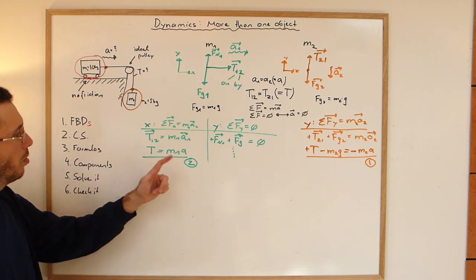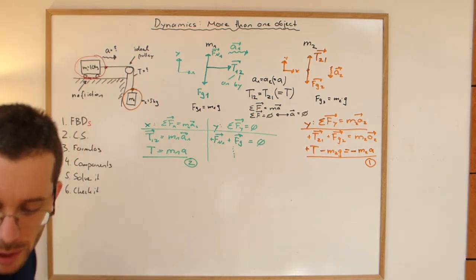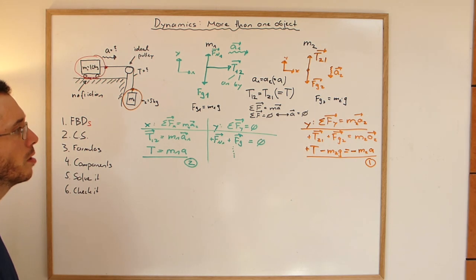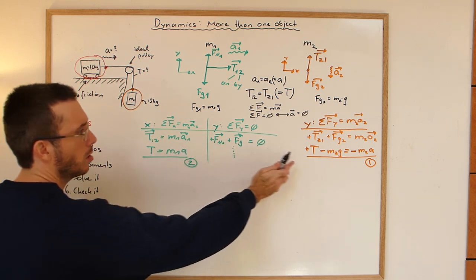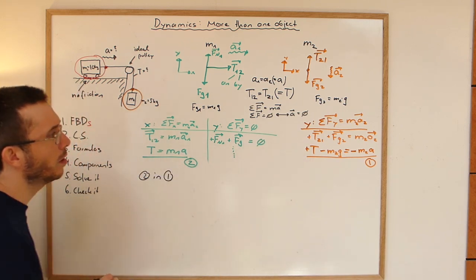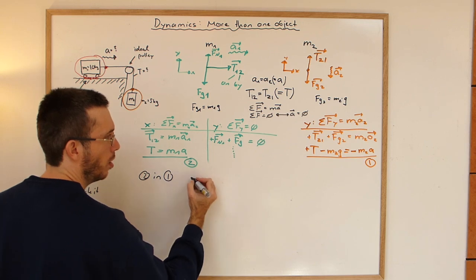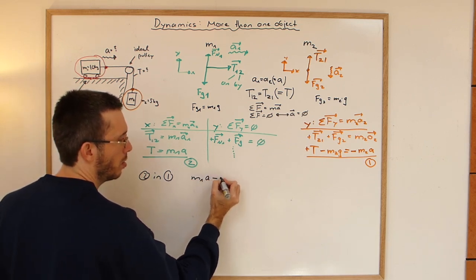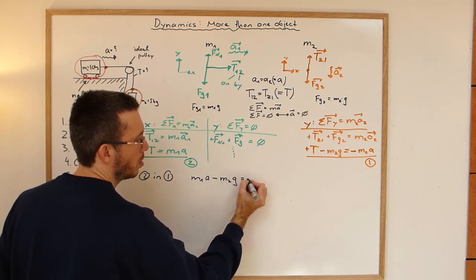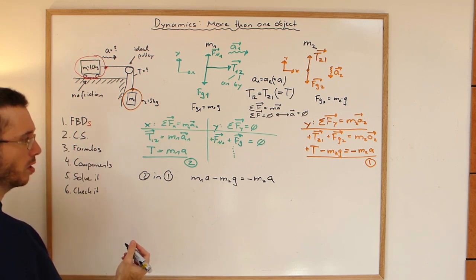What are my unknowns? My unknowns are the acceleration and T, so two unknowns, two equations. Therefore, any math teacher will tell you this system of equations is solvable. So let's try with plugging in T into that equation. So let's put two in one. I'm replacing the T here with my m1 alpha. So I have m1 acceleration minus m2g is minus m2 acceleration.